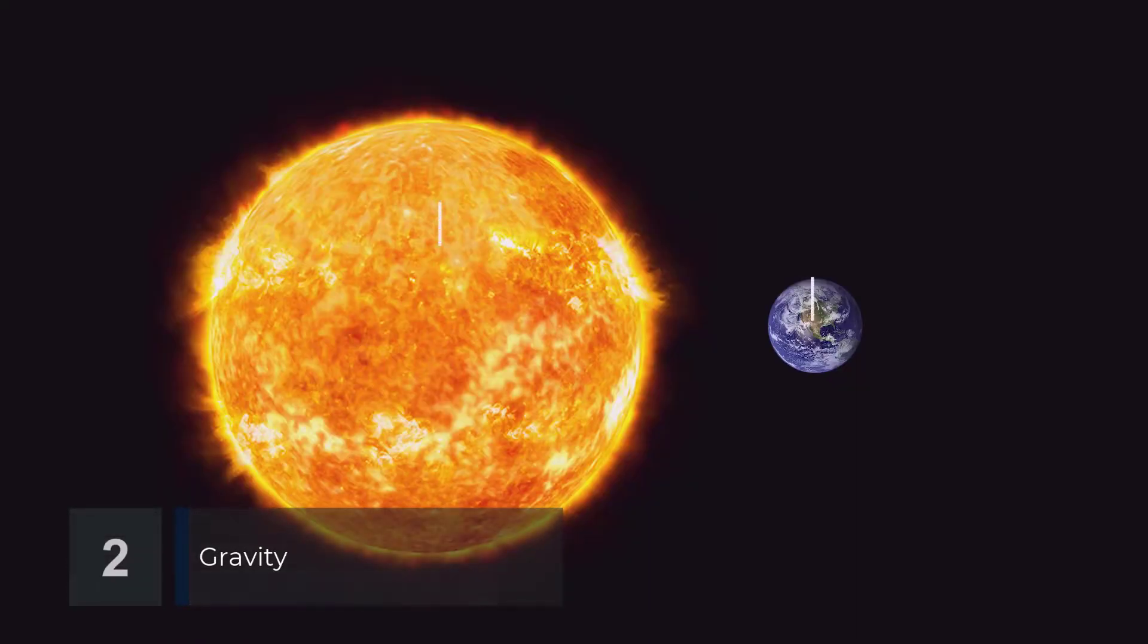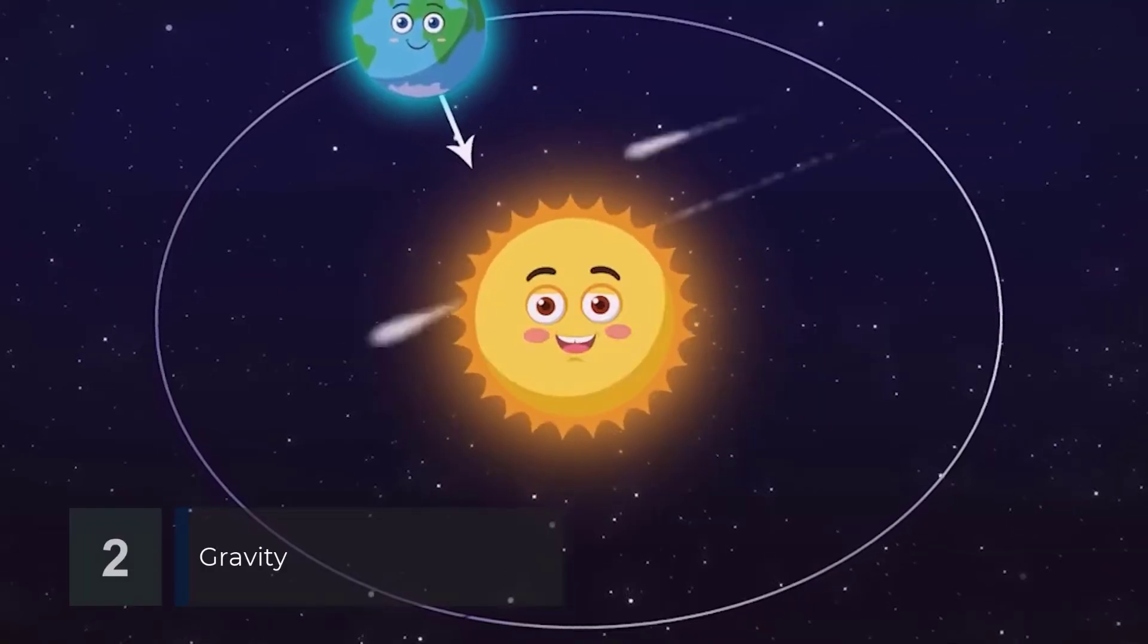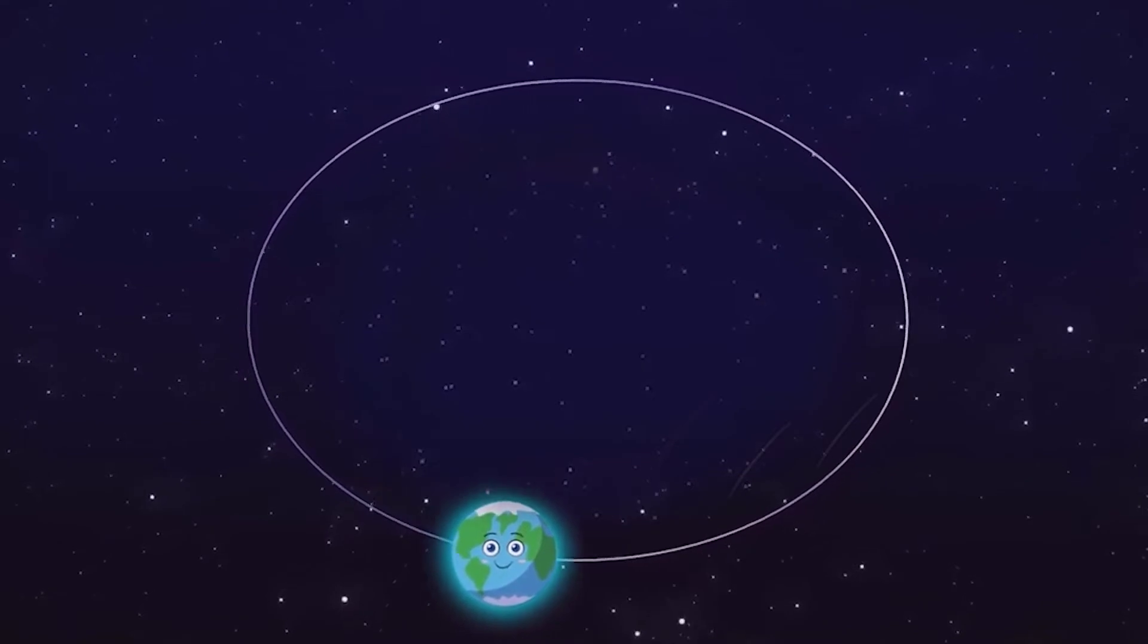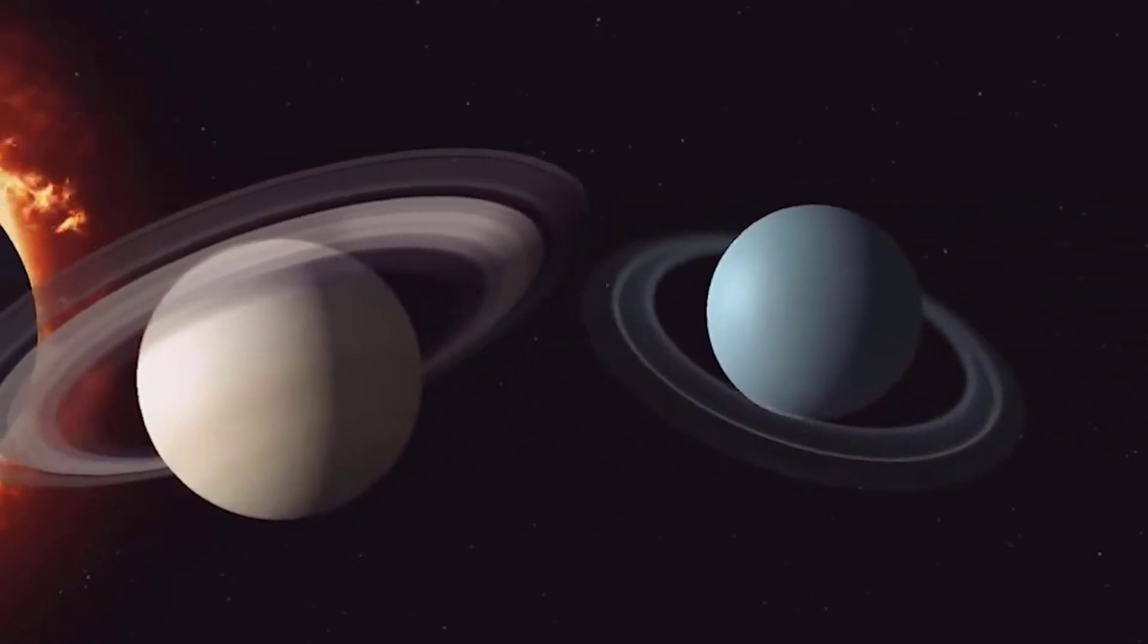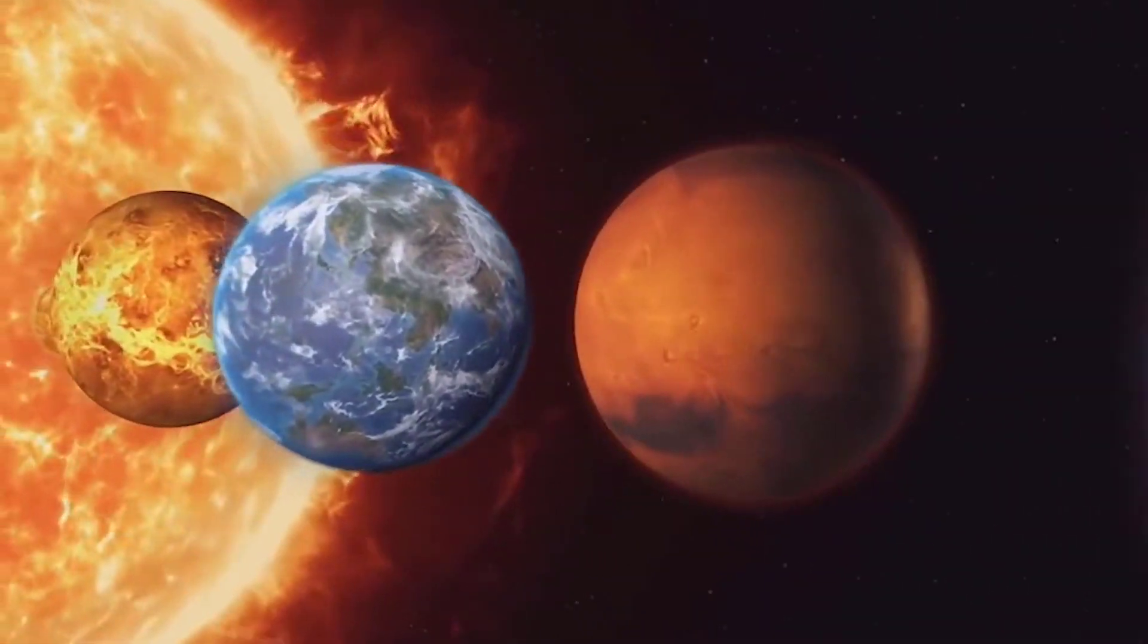The mass of the sun is more than 300,000 times that of Earth, so you would think that if it suddenly disappeared, the instantaneous gravitational vacuum would wreak havoc on the whole solar system. Well, you would be right, except it would not be instantaneous.